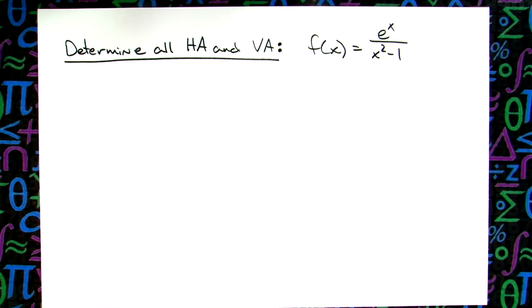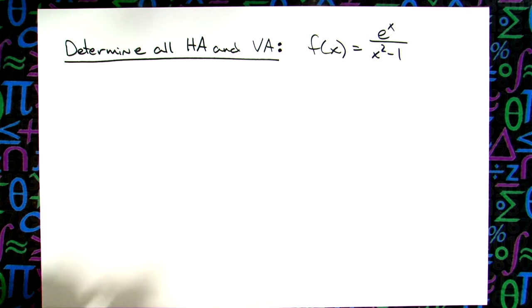In this video, we're going to take a quick look at the function f(x) = e^x over x² - 1, and we're going to locate all horizontal and vertical asymptotes.